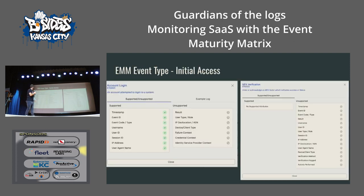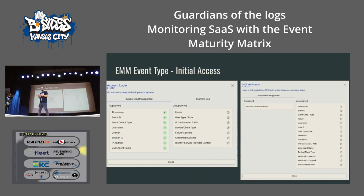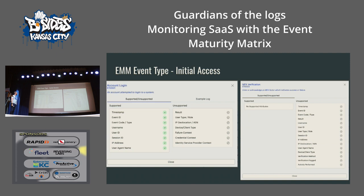An example from the same product with the name removed: account login shows a lot of cool information — they have an IP address, great. But they don't include geolocation information, so you have to enrich that data. There's a user agent name, but credential context, failure status, and user type are all missing. For MFA verification, they don't support anything at all — if someone changed their MFA token or added a new one, you're not going to detect it. That's the huge contrast we're trying to highlight: bringing awareness and normalizing it in a digestible way that makes sense for everybody.